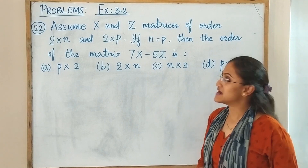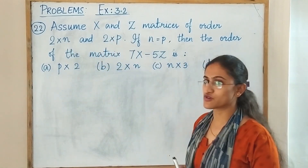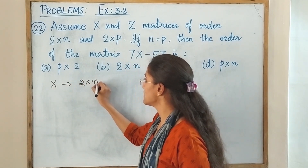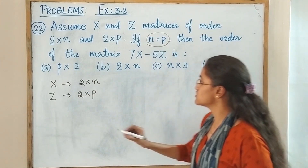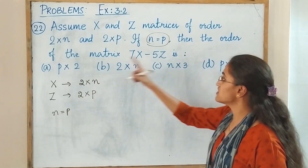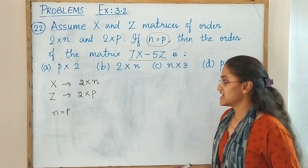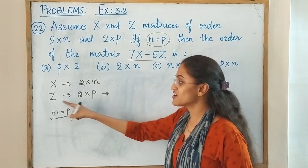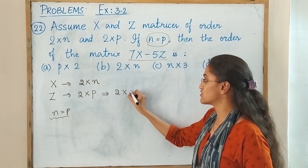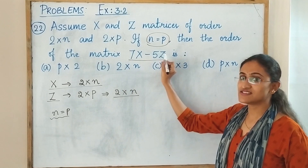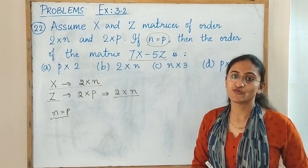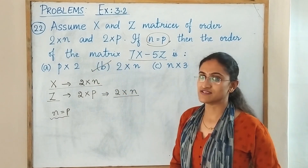Look at the next question: assume X and Z are matrices of order 2 cross n and 2 cross p respectively. If n equals p, then find the order of the matrix 7X minus 5Z. If n equals p, then Z is also of order 2 cross n. Both X and Z have the same order, so we can subtract them, and the resultant matrix will also be of order 2 cross n. Hence the answer is option B. Hope you enjoyed the video — please don't forget to like, share, and subscribe. Thank you.